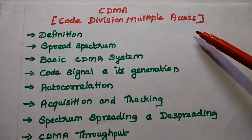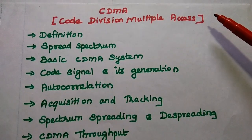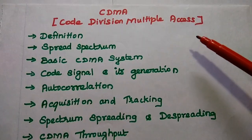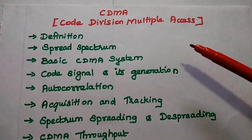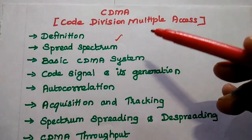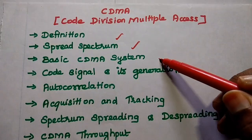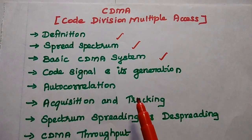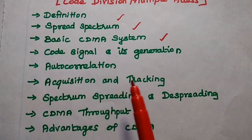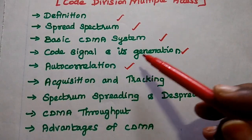Dear students, now we are going to discuss CDMA technique in satellite communication. CDMA stands for Code Division Multiple Access. In this lecture video, we are going to discuss the definition of CDMA, the principle of CDMA (i.e., spread spectrum), the basic CDMA system concept, code waveform and its generation, and the property of the code waveform (i.e., autocorrelation property).